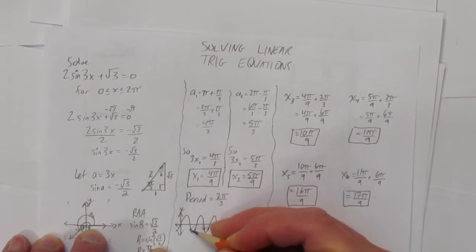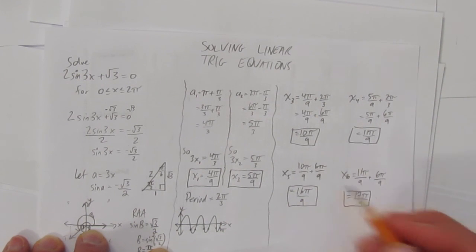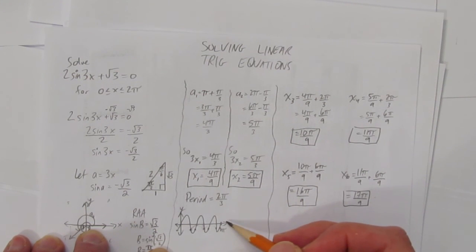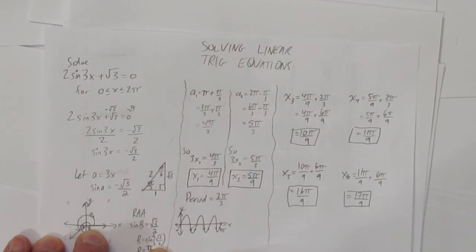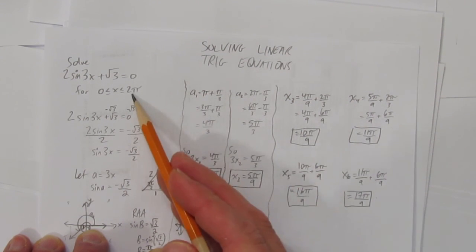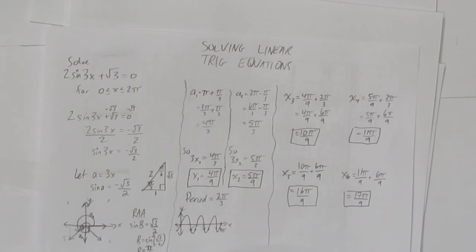How do we know we're done? We knew there were going to be six solutions because of the period, or you can understand it because of the compression. But even if you try to add on another 6π/9 to these, notice it would be much bigger than 2π. 2π would be 18π/9. So adding on another 6π/9, you'd go past this 2π limit that the question asked for. So that's how you solve linear trigonometric equations.